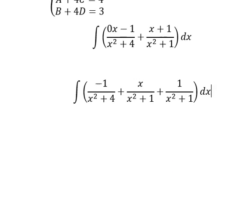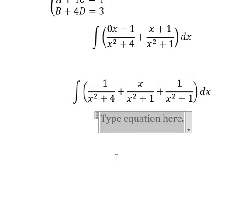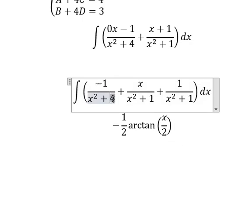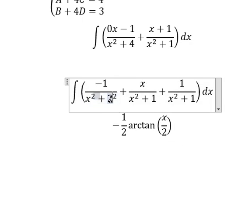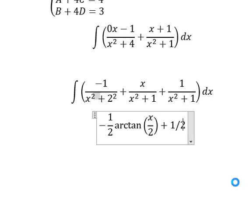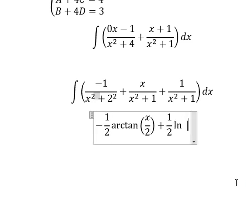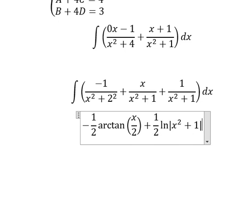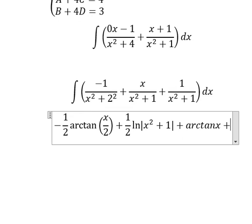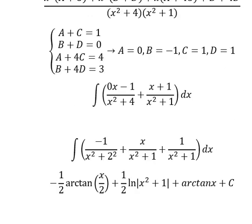Now we have the final answer. The integration gives us: -½ ln|s²+1| plus arctan(s), plus C. Thank you for watching.